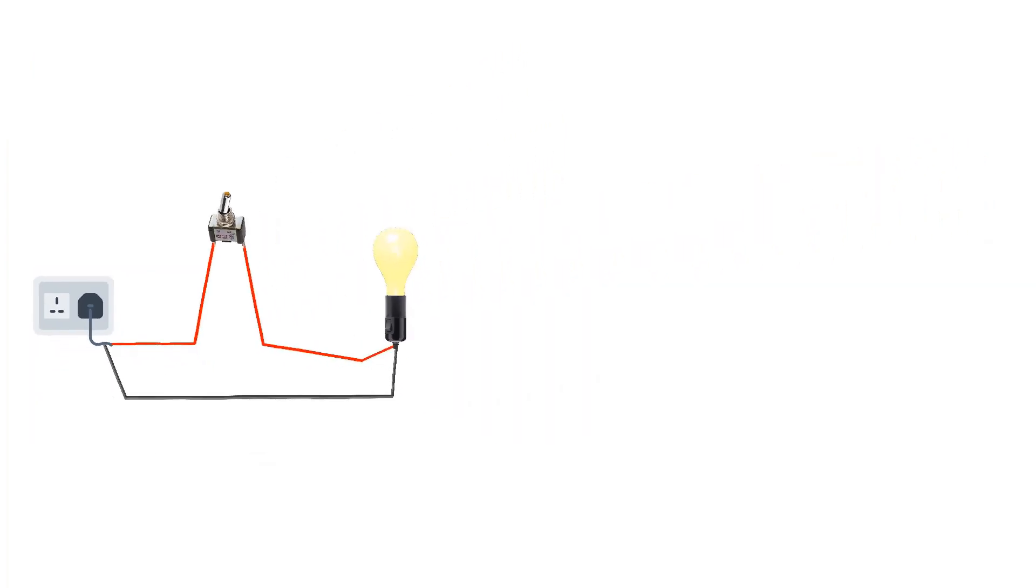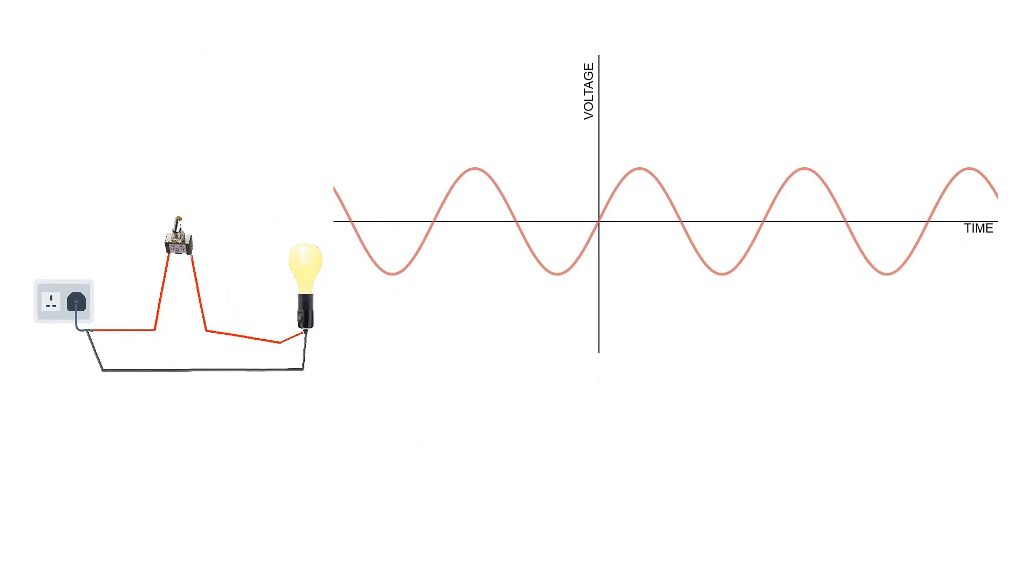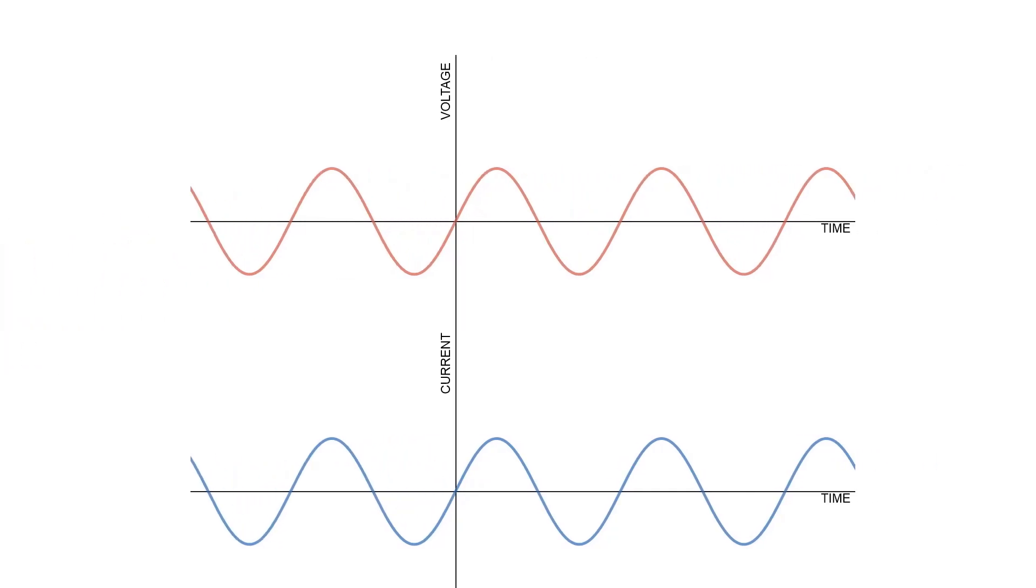Now voltage as we know is a sine wave. Current will also be a sine wave in phase with voltage because the lamp is a resistive load. What is in phase? In phase means that the two waveforms start and end at the same time.